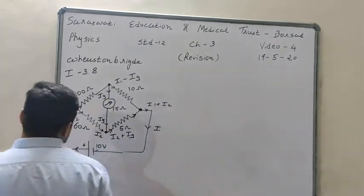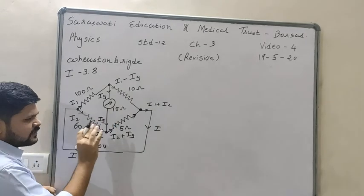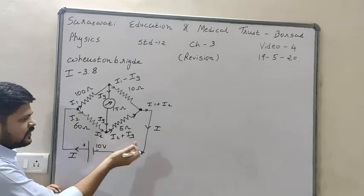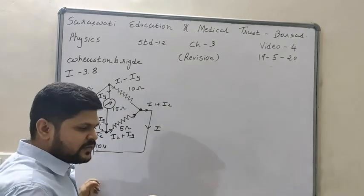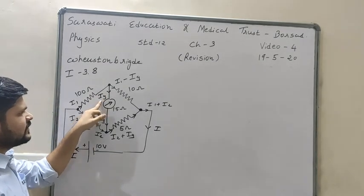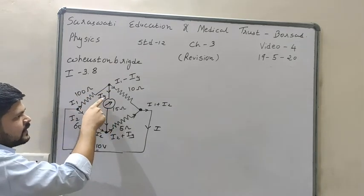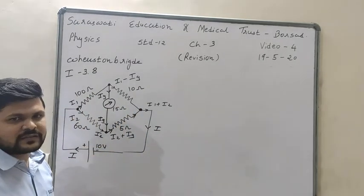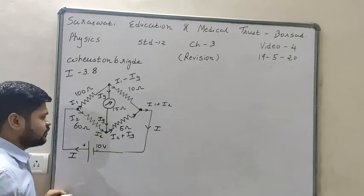If a student takes IG flowing in the upper direction, that is also correct — there is no problem. If we have assumed IG flowing downward and our answer for IG comes out positive, then our assumed direction is correct. But if our answer is negative, then our assumed direction is reversed.